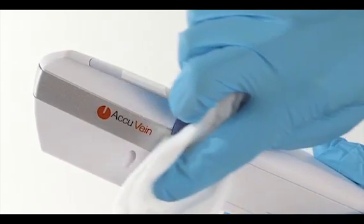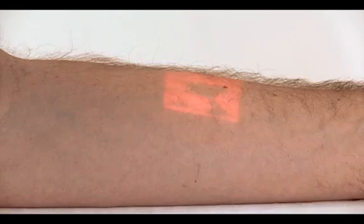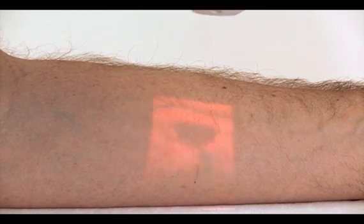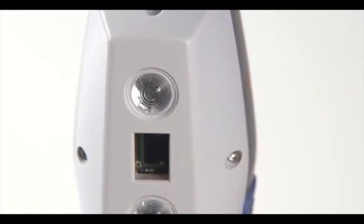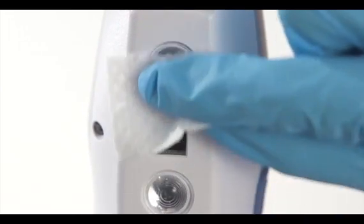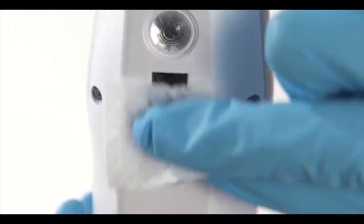The AccuVein AV400 is made of medical grade plastic. Clean the body of the device and the charging cradle with any hospital approved wipe. If you see spots on the projected sight, this means you have to clean the vein viewing lens. You can clean the lens with a slightly damp, pre-moistened alcohol prep pad. Too much liquid on the cloth can damage the AV400.